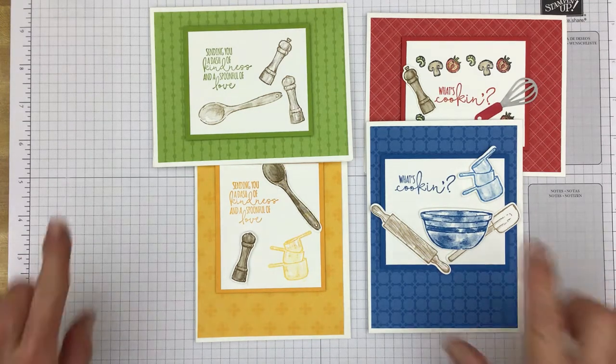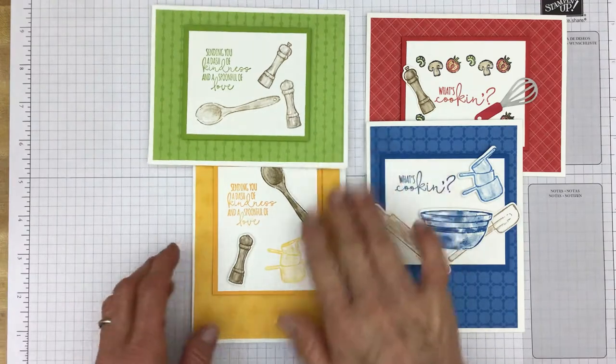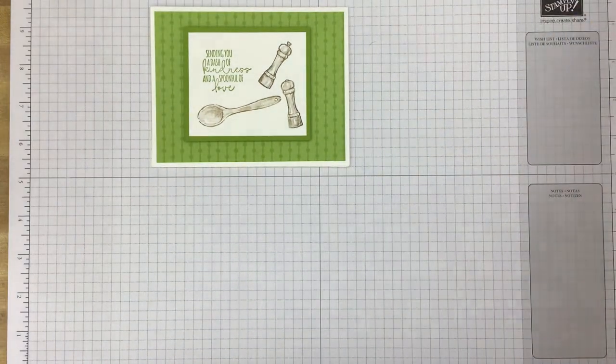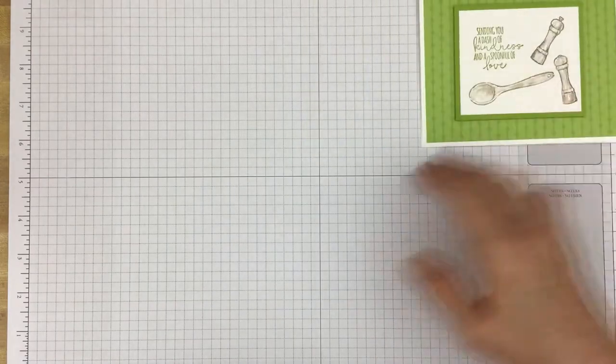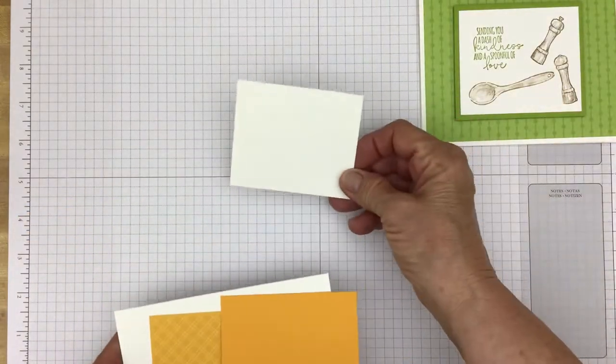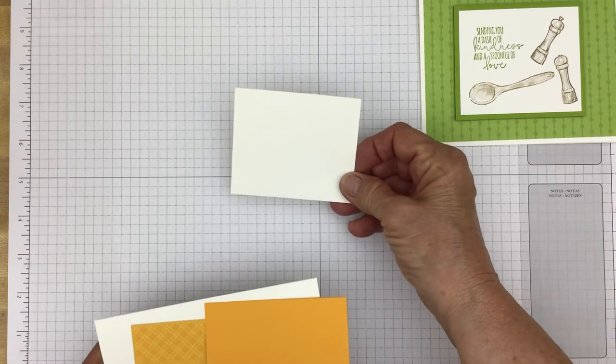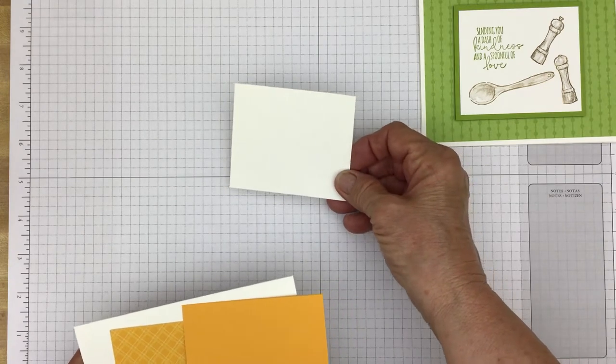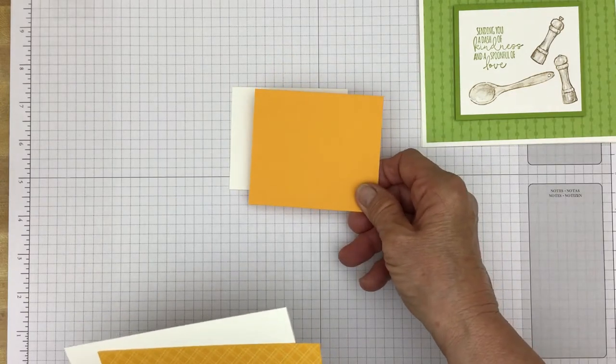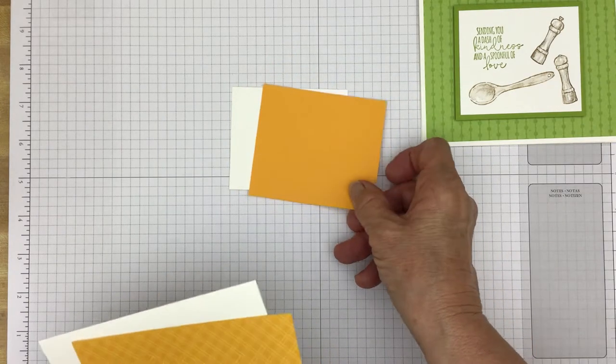So as I said we're going to make this card together. Only we're going to do it with Mango Melody. So let's get started. As I said you're going to need the piece of basic white that measures two and three quarters by three and a quarter. And then a piece of Mango Melody cardstock that measures three by three and a half.